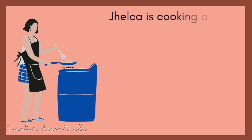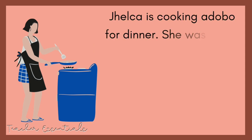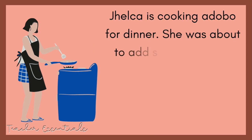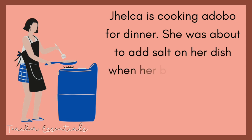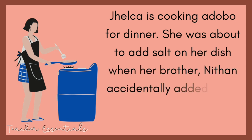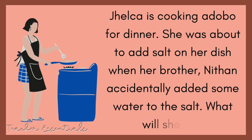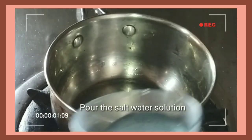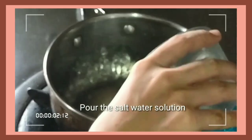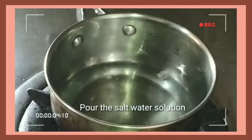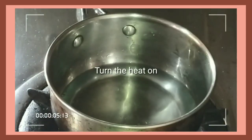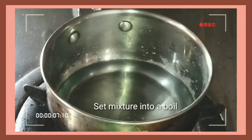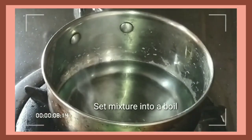Jelka is cooking adobo for dinner. She was about to add salt on her dish when her brother Nathan accidentally added some water to the salt. What will she do? She put the salt water solution in a pot, turned the heat on, and let the mixture come to a boil.